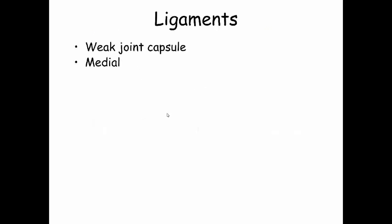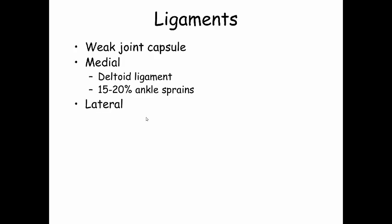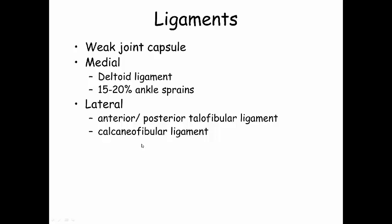You have ligaments which hold this joint together, since the joint capsule is weak. On the medial side, it's called your deltoid ligament. 15 to 20 percent of your ankle sprains can occur on the medial side. On the lateral side, you have the anterior and posterior talofibular ligament — it goes from your talus to your fibula on the anterior side, and another goes from your talus to your fibula on the posterior side. The third ligament on the lateral side is your calcaneofibular, which goes from the calcaneus to the fibula. Remember, your fibula is on the lateral side.